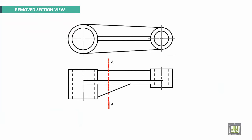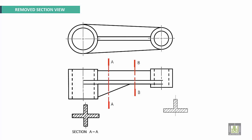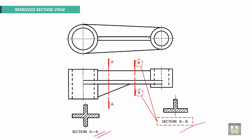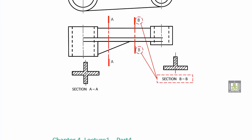Another example of a removed section: this is the first section — remove it. Next, another section will be removed. They are properly labeled: this is the BB section and this one is the AA section.